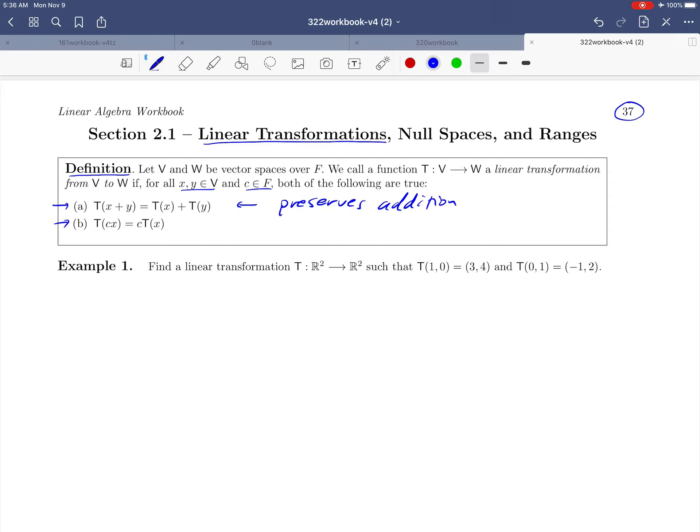And then B says that T of a scalar c times x equals c times T of x. When a function has this property, we say that it preserves scalar multiplication. So what we could say then is that a linear transformation is just a function that goes between two vector spaces that preserves addition and scalar multiplication. It turns out linear transformations have all kinds of nice properties, and we're going to get started by just starting to explore some of the properties that linear transformations have.